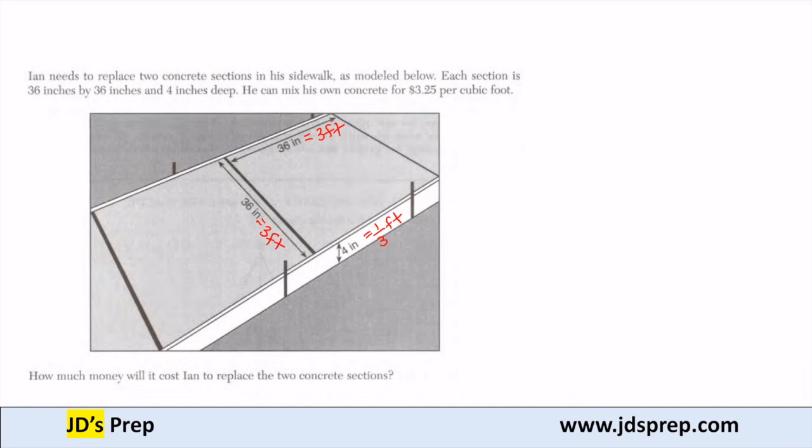If we want to know the amount of concrete that Ian needs, let's figure out the volume of each section. Keep in mind that he is replacing two different sections, so we will have to eventually multiply by 2.